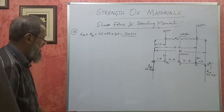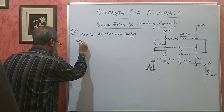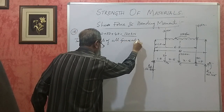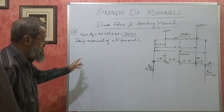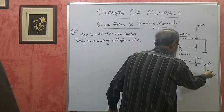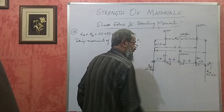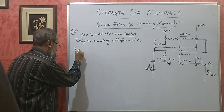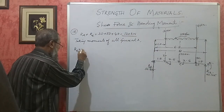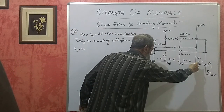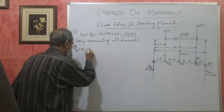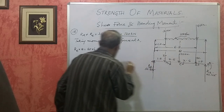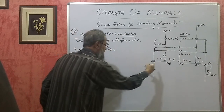The second equilibrium condition: taking moments at A, the sum of clockwise moments must equal the sum of anti-clockwise moments. Re into 8 equals 40 into 6.5, plus 50 into 4, plus 30 into 1.5.